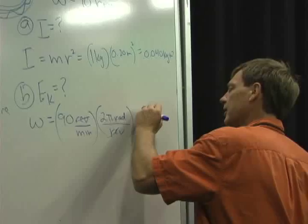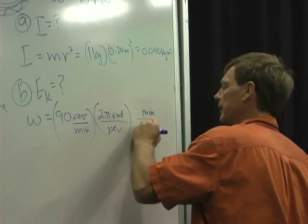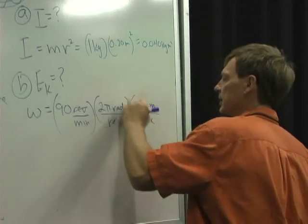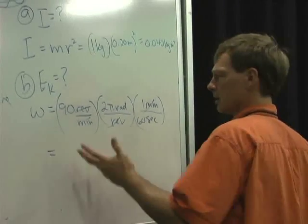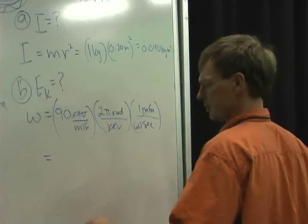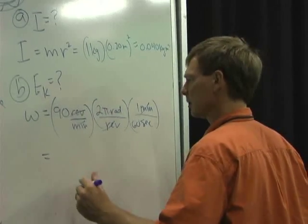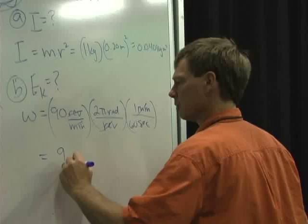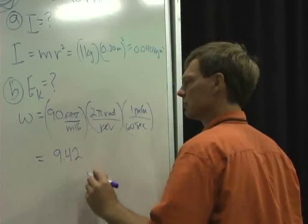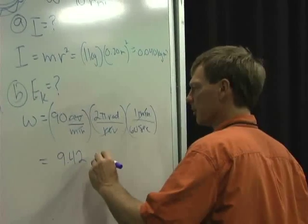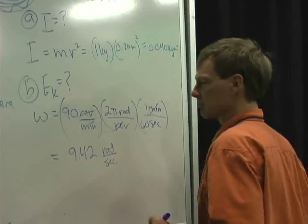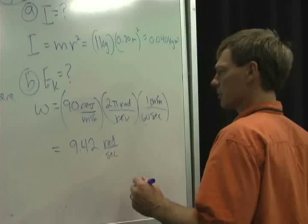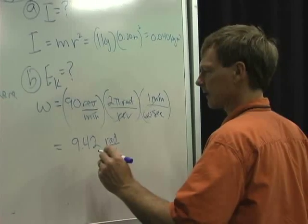We've got minutes on top, seconds on the bottom - 60 seconds in a minute, so the minutes cancel. And so it's going to be 9.42 radians per second. That should be about right. 9.42? Yeah, I like it. OK, 9.42 radians per second.